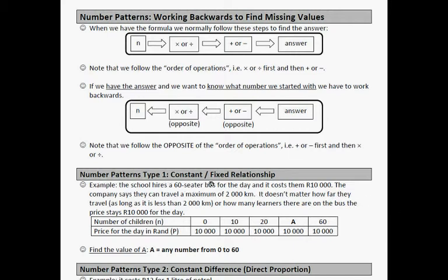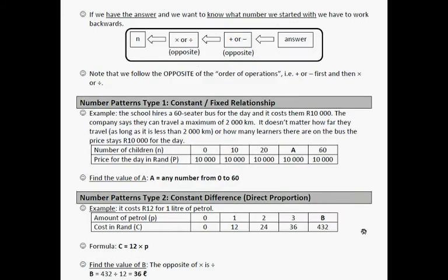The school hires a 60-seater bus for the day, and it costs them 10,000 rand. The company says that they can travel a maximum of 2,000 kilometers. It doesn't matter how far they travel, as long as it is less than 2,000 kilometers, or how many learners there are on the bus, the price will stay 10,000 rand. So the number of children, 10,000. Find the A, any number between 0 and 60, because it doesn't matter what the number is, the amount will stay as 10,000 rand. That was fairly easy, right?